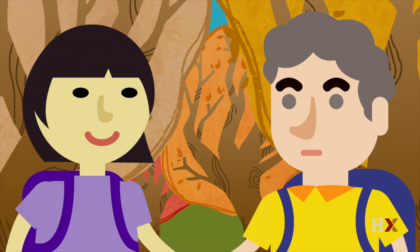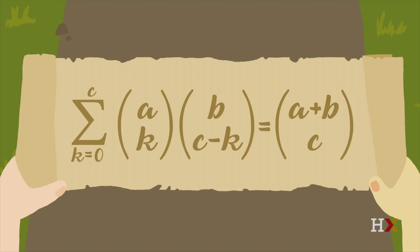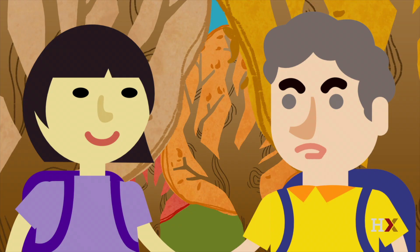What is this? Colin and Sylvia don't know what to make of the scroll they have found. That's impossible. It looks like they just added the A and B to get A plus B, and added the K and C minus K to get C. What kind of bird brain would come up with a formula like this?